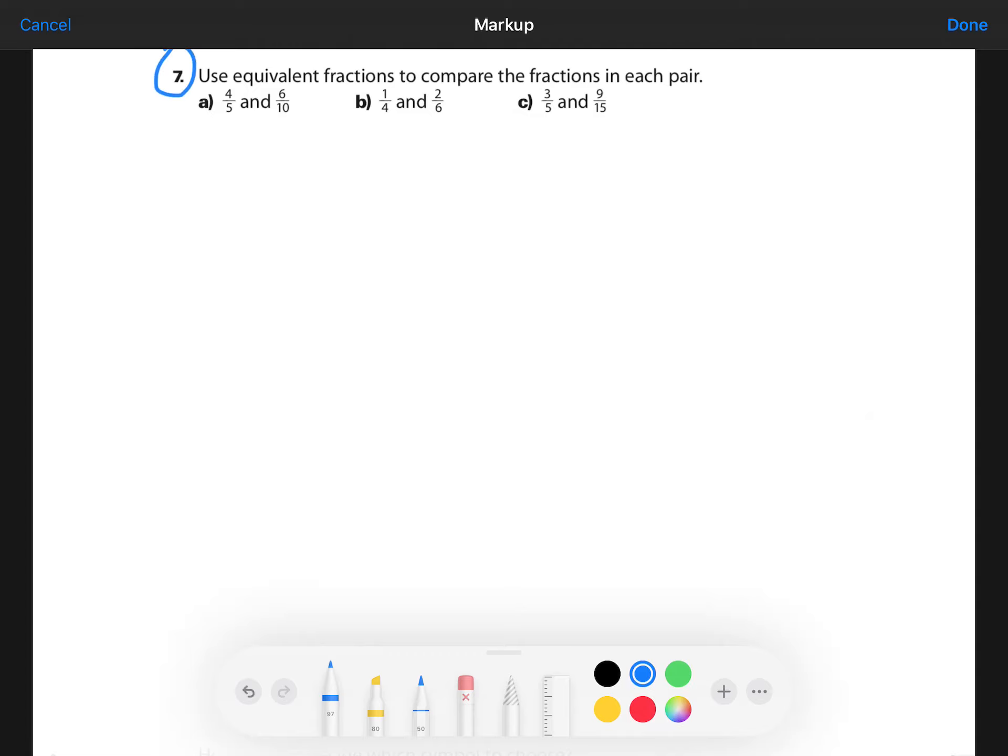Moving on to number seven, different strategy being asked for here. It's asking us to use equivalent fractions to compare the fractions in each pair.